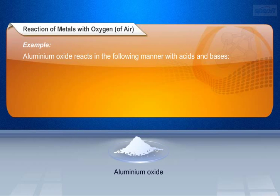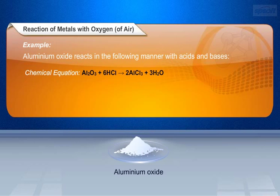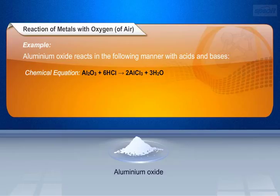Now let us see Aluminium Oxide's reaction with acid. One molecule of Aluminium Oxide, Al2O3, and six molecules of hydrochloric acid, 6HCl, combine to form two molecules of Aluminium Trichloride, 2AlCl3, and three molecules of water, 3H2O, are released.